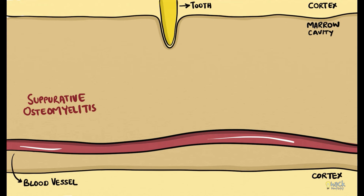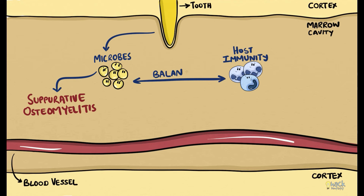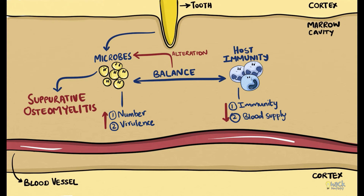Suppurative osteomyelitis of the jaw is primarily caused by infections, usually from infected teeth or periodontium. There is a delicate balance maintained between the microorganisms and the host immune system; otherwise, every tooth infection or periodontal disease could result in osteomyelitis. Factors favoring microorganisms are their number and virulence, while factors in favor of the host are host immunity and local blood supply. Anything that causes an increase in number and virulence of microorganisms or a decrease in host immunity and local blood supply could result in suppurative osteomyelitis.